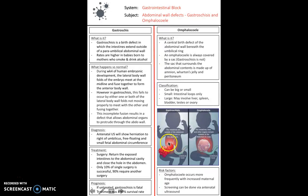This can be seen as the intestines outside the abdomen through a hole next to the umbilicus. It can be detected on antenatal ultrasound by free-floating bowel, small fetal abdominal circumference, and herniation to the right of the umbilicus. Treatment is surgical — returning the exposed intestines to the abdominal cavity and closing the hole. However, only 10% of single surgeries are successful, and 90% of affected patients require another surgery following this.